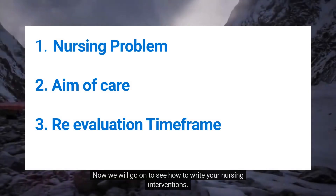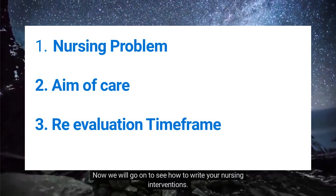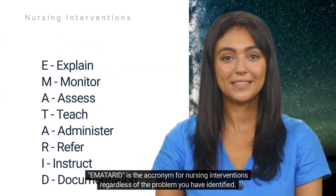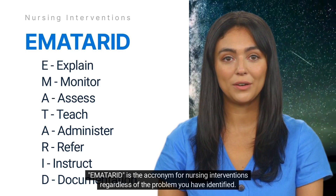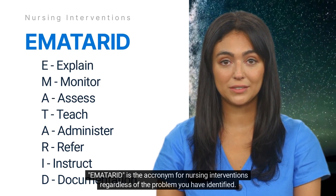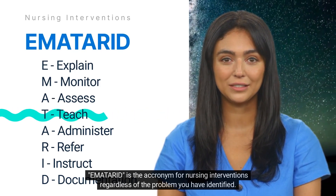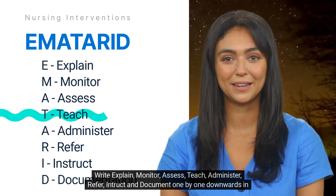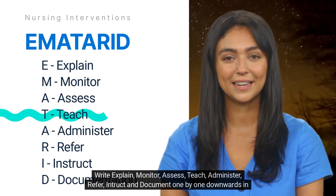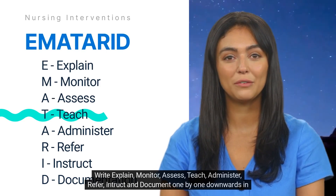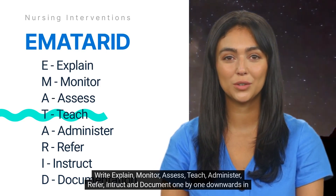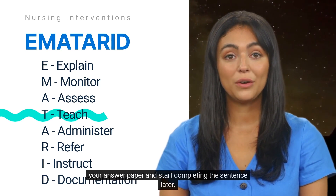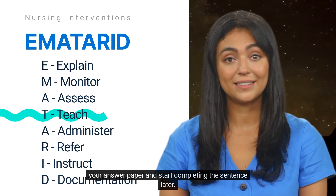Now we will look at how to write your nursing interventions. IMATERID is the acronym for nursing interventions, regardless of the problem you have identified. Write: explain, monitor, assess, teach, administer, refer, instruct, and document — one by one downwards in your answer paper, and start completing each sentence after.